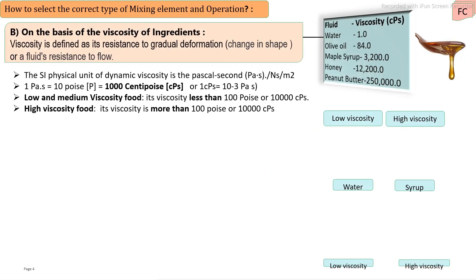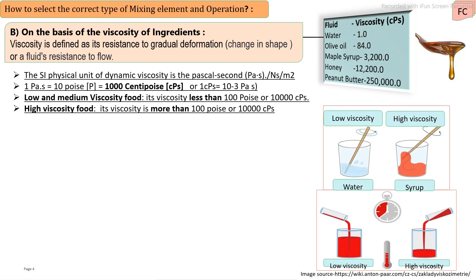As per the initial viscosity of liquid substances or ingredients, the mixing element also changes. Viscosity is the resistance to deformation, or the fluid's resistance to flow. For mixing of low viscosity liquids, a lower force is required, and for mixing of high viscosity liquids, a higher force is required. The basic unit of viscosity in SI is Pascal second; 1 Pascal second equals 10 poise.